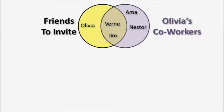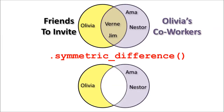I asked Olivia if I could get a list of some of her co-workers, and she provided one. Here I have two sets: the set of friends I plan to invite and the set of Olivia's co-workers. I've overlapped them to show that there are shared elements — Vern and Jim exist in both sets. If I use the symmetric difference operator on the sets, it'll return a set which contains the elements of my invite set that are not in Olivia's co-workers and all of the elements from Olivia's co-workers that are not in the set of friends I plan to invite. This is basically the opposite of what you get when you use the intersection operator.